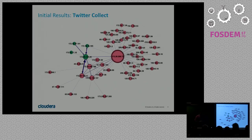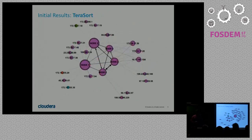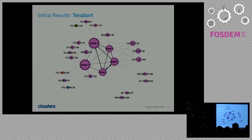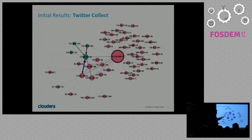After looking at these high-level initial results, we can see two very typical different topologies of communication networks. We see communication networks here on a host level, which is an interesting starting point. But what can we learn from here?